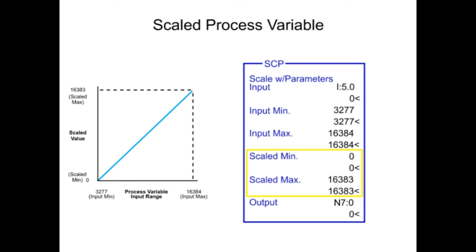Scaled minimum value is programmed as 0, representing the low end of the output range. Scaled maximum value is programmed as 16,383, representing the high end of the output range. The SCP output parameter is the integer file address where the scaled output is stored and then used by the PID instruction as the process variable.